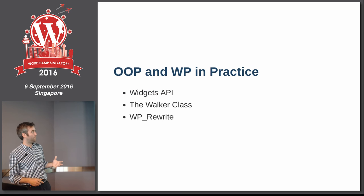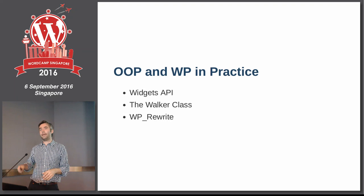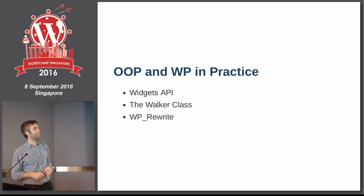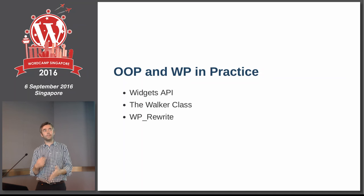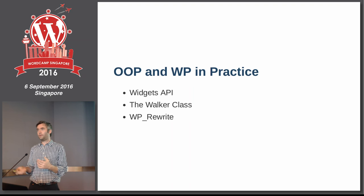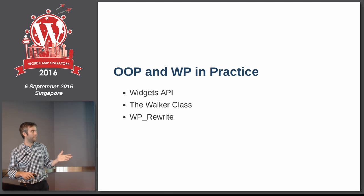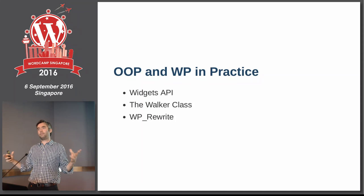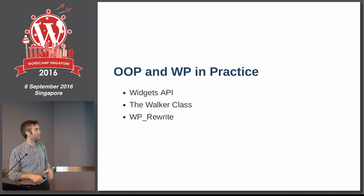OOP in WordPress in practice: probably the best example is the Widgets API. If you want to create your own widget, you extend a core widget class and use a hook to add it back into the system. There's also the Walker class — for custom nav menus or lists of pages, you extend Walker with your own ideas and pass it back to WordPress. A great example of a singleton is WP_Rewrite — the central object managing rewrites, working out what post a given URL slug should show.